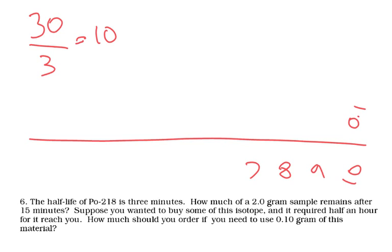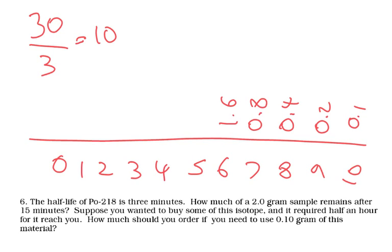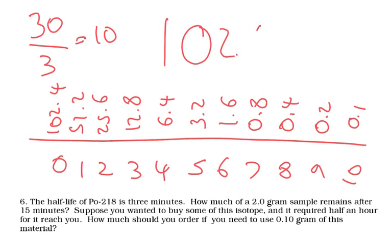8, 7, 6, 5, 4, 3, 2, 1, 0, and double up each time. So we're going to have 0.2, 0.4, 0.8, 1.6, 3.2, 6.4, 12.8, 25.6, and 51.2, and then finally 102.4. So our final answer is 102.4 grams.